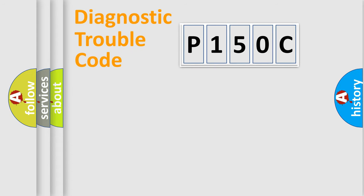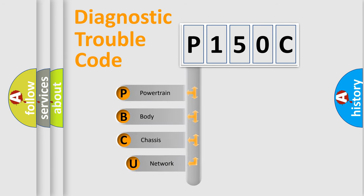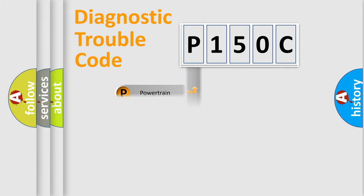Let's do this. First, let's look at the history of diagnostic fault code composition according to the OBD2 protocol, which is unified for all automakers since 2000. We divide the electric system of automobile into four basic units: Powertrain, Body, Chassis, and Network. This distribution is defined in the first character of the code.